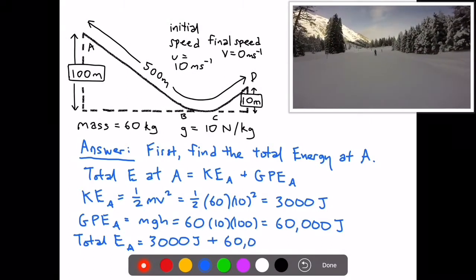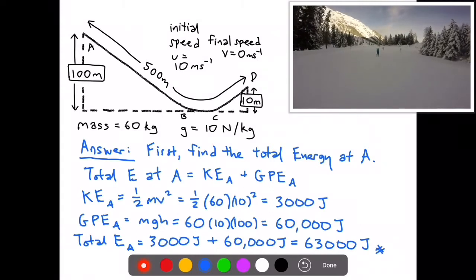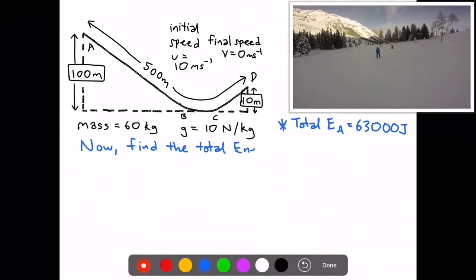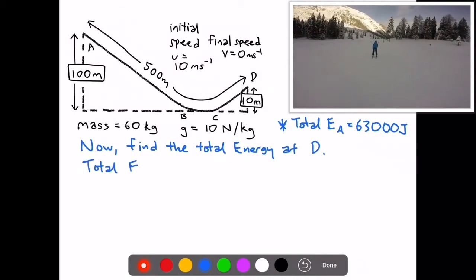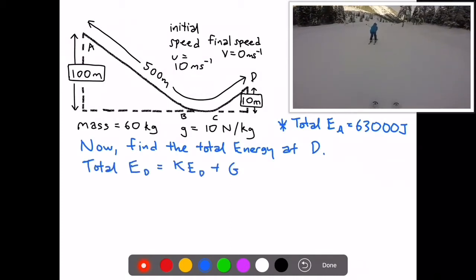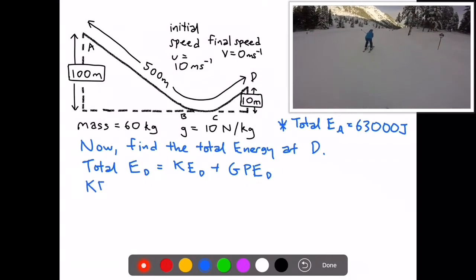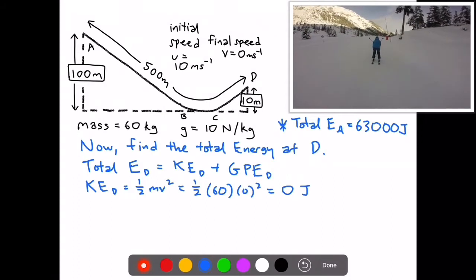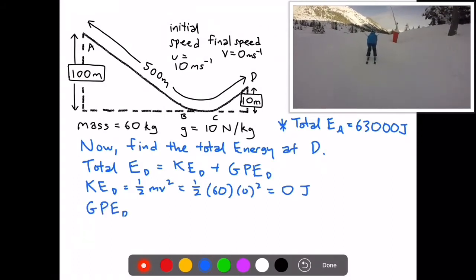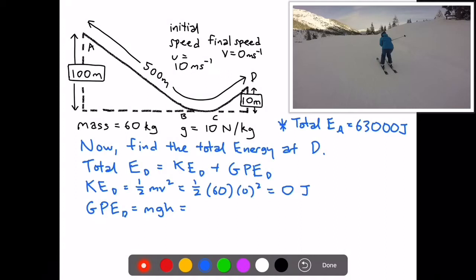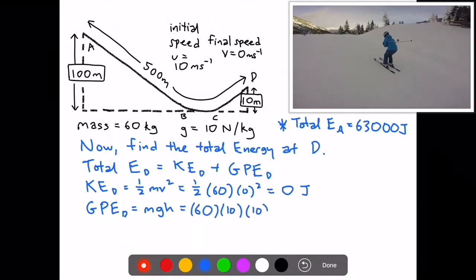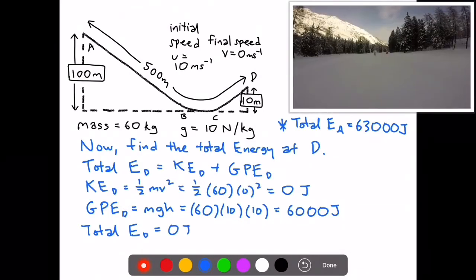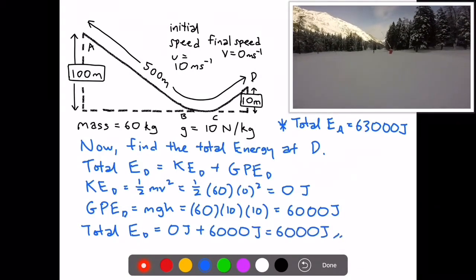So the total energy at A will be 3,000 plus 60,000 Joules, which equals 63,000 Joules. Now we find the total energy at D. The total energy at D is equal to KE at D plus GPE at D. The KE here is half mv squared, which is equal to half times 60 times 0 squared, which is 0 Joules. The GPE at D is equal to mgh, which is equal to 60 times 10 times 10, which is equal to 6,000 Joules. Therefore the total energy at D will be equal to 6,000 Joules.